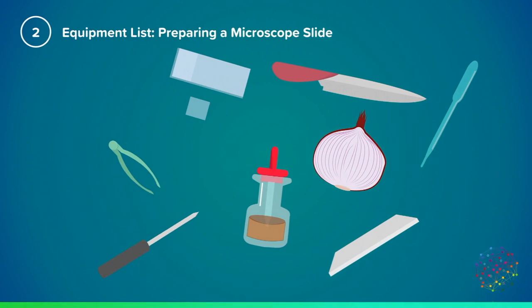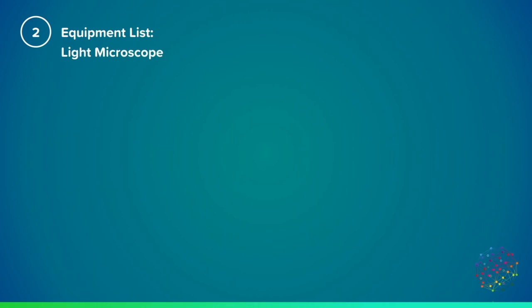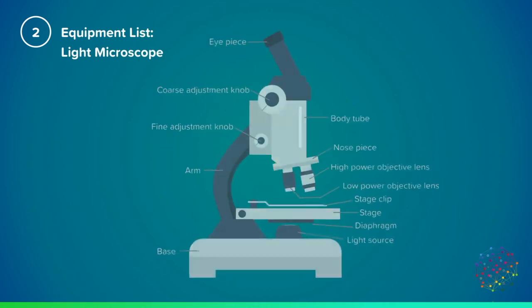The equipment you'll need to prepare a microscope slide is the microscope slide itself, and a cover slip, a knife, a pipette, onion, white tile, iodine solution, mounted needle and forceps or tweezers. You'll also need a light microscope to view your cells.